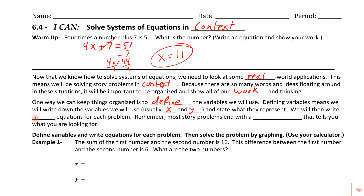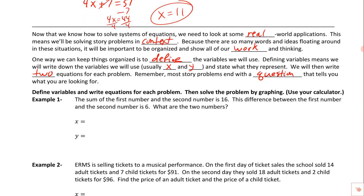We will write two equations because we need a system. Most story problems end with a question that tells us what we're looking for. Let's look at the first example. The instructions say to define variables, write equations, then solve by graphing using a calculator. The problem states: the sum of the first number and second number is 16. The difference between the first and second number is 6. What are the two numbers?